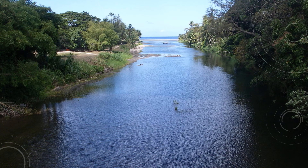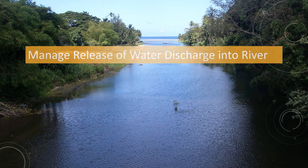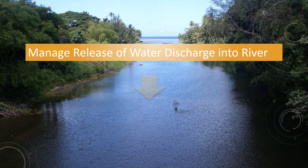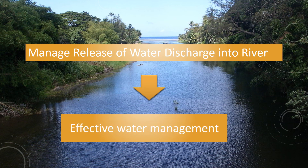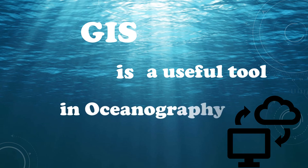The tool enables authorities to manage the release of water discharge into the river, especially in the winter period, for navigation and effective water management. These are just a few GIS applications in the ocean, but the potential of GIS is limitless. We just need to explore — and who knows what more GIS will hold for the future of our oceans.